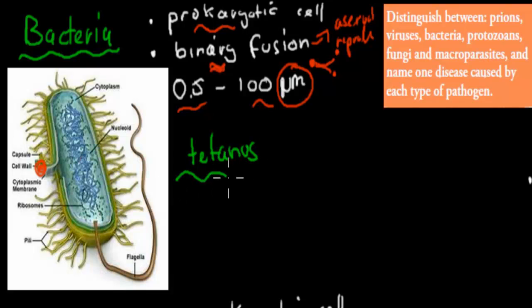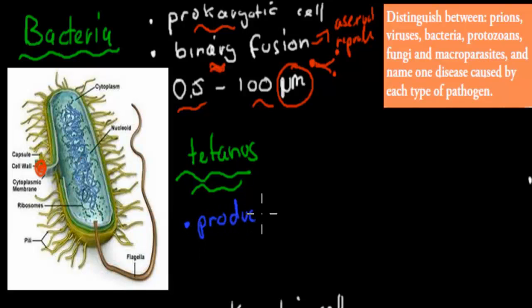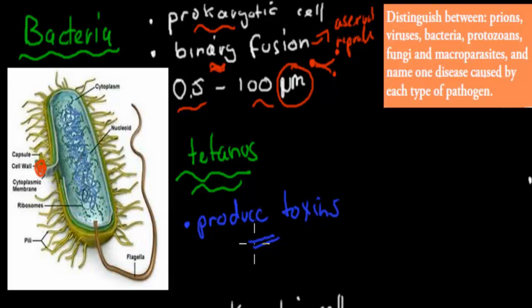With bacteria, they don't invade cells — what they do is produce chemicals. In most cases they produce toxins which will damage us. For example, tetanus produces a toxin which damages our nerve cells and makes us spasm. So harmful bacteria will produce toxins which can then cause us harm.